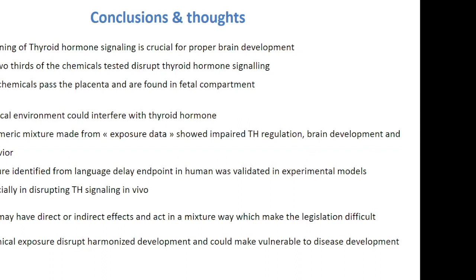Regarding fluorine: halogenated compounds — chlorinated, brominated, and fluorinated — are the most prone to disrupt thyroid hormone. We don't know exactly why, but it may relate to the halogenated property of the hormone itself.